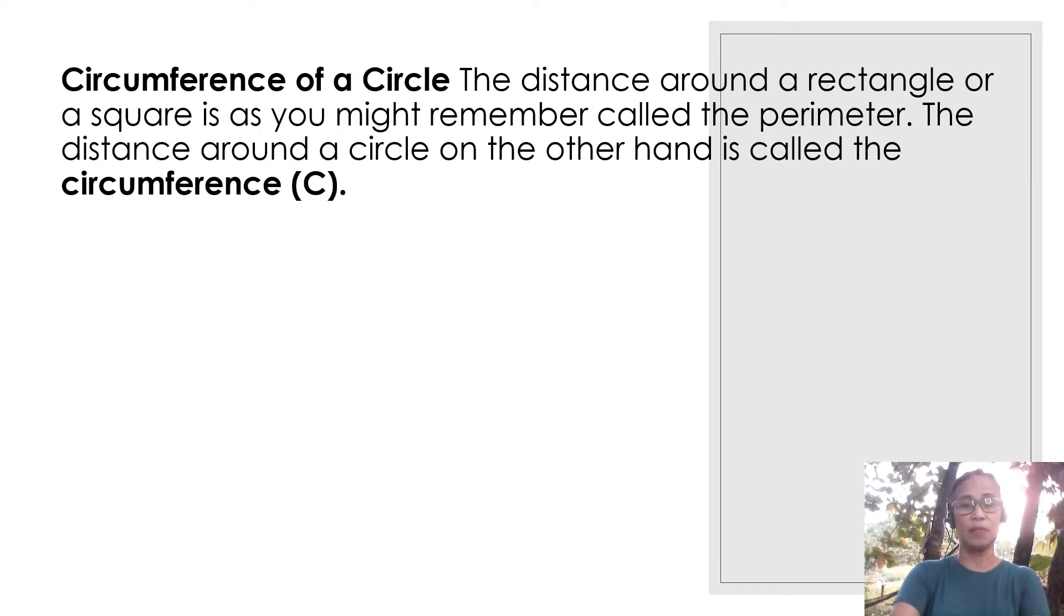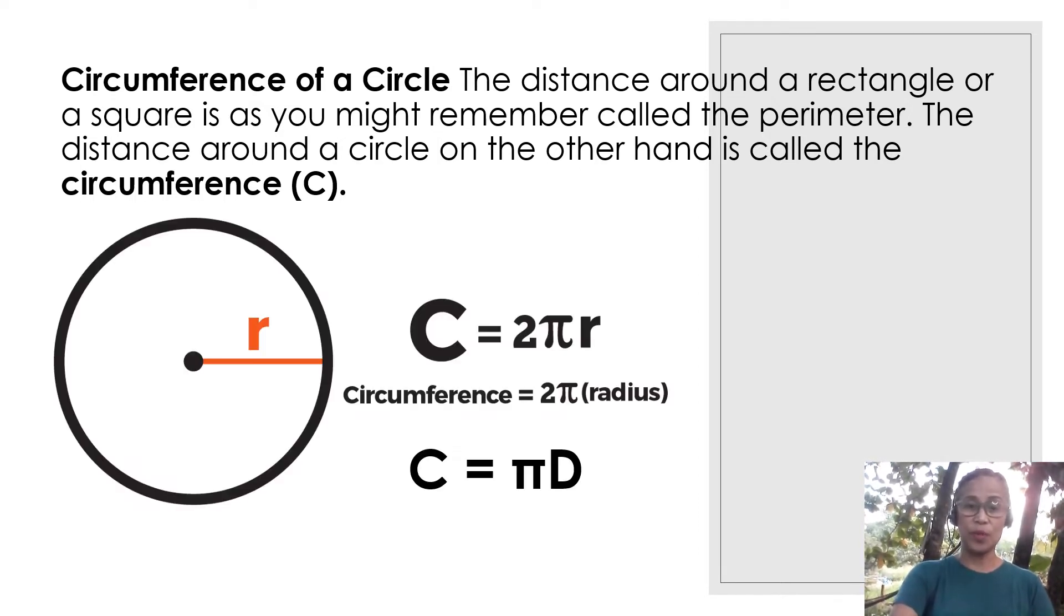So let us now learn how to find the circumference of a circle. Remember that the distance around the rectangle or a square is called the perimeter. Same thing is true that the distance around the circle is called the perimeter of the circle or most commonly known as the circumference of the circle. So the formula that we use is C equals 2 times pi times r. R represents the length of the radius of the circle.